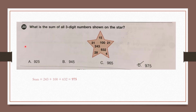Question number 20: What is the sum of all 3-digit numbers shown on the star? The 3-digit numbers are 100, 243 and 632. The sum of all these numbers is 975. So our answer is option D, 975.